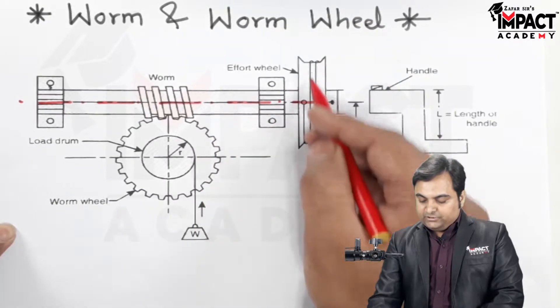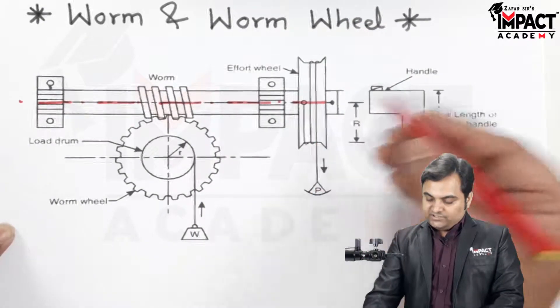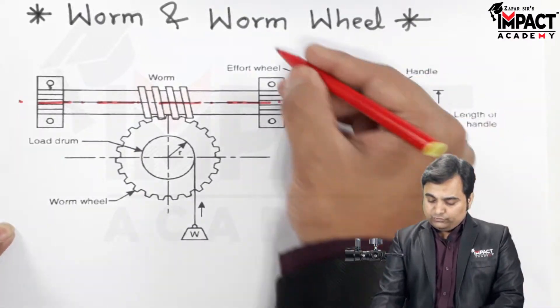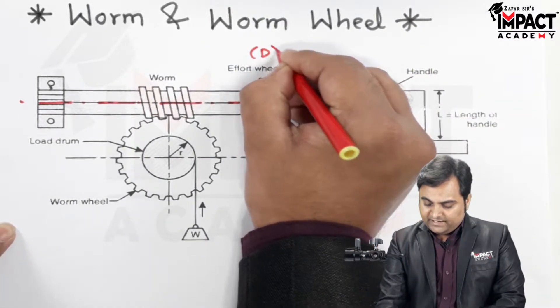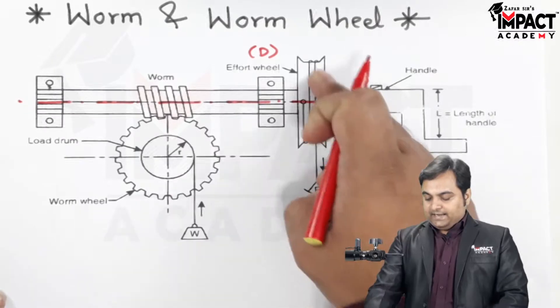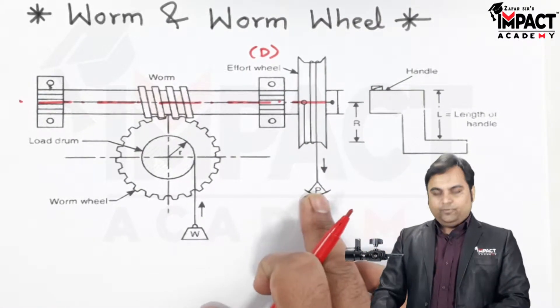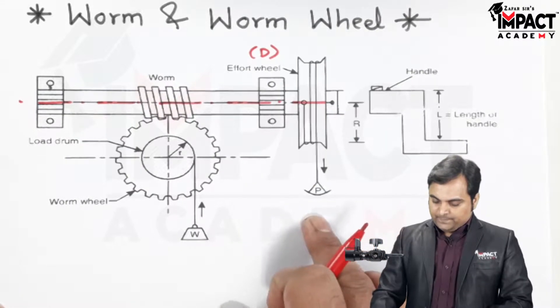The worm is connected to this effort wheel which has a radius of capital R. The diameter of the effort wheel would be capital D, and at the effort wheel a rope is attached with which we can apply the effort.